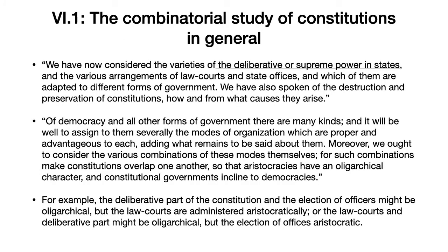The first methodological chapter concerns the combinatorial study of constitutions in general. Aristotle introduces the chapter by stating that he has now considered the varieties of the deliberative or supreme power in states, the various arrangements of law courts and state offices, and which of them are adapted to different forms of government. That's a reference to Books 3 and 4, where Aristotle distinguished the assembly or deliberative part, the judicial or court-oriented part, and the assignment of various other kinds of offices — and how forms of government, democracies, oligarchies, and so on, have different arrangements for these different elements.